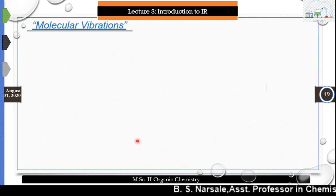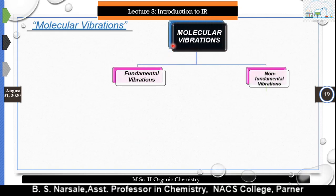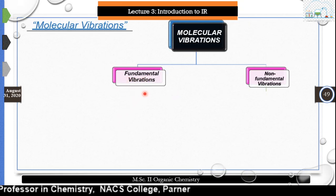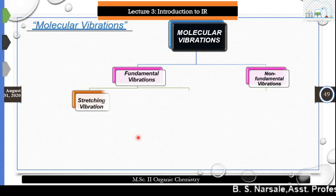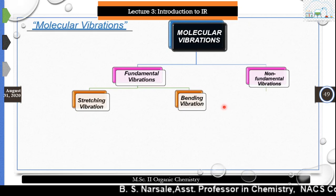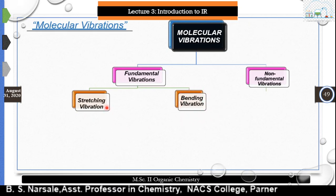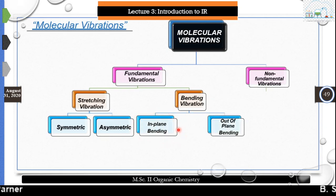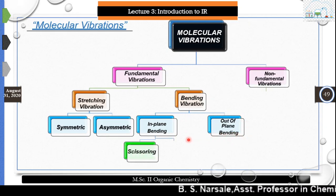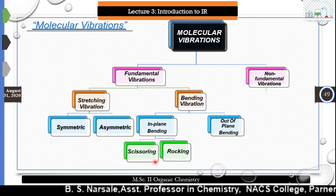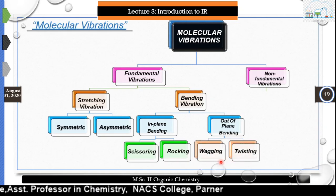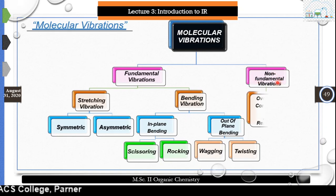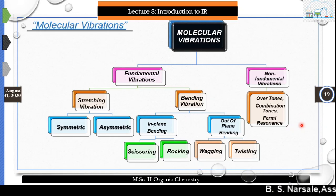Molecular vibrations are mostly divided into two types: fundamental vibrations and non-fundamental vibrations. Fundamental vibrations are further divided into stretching vibrations and bending vibrations. Stretching vibrations have symmetric and asymmetric types, while bending vibrations have in-plane bending and out-of-plane bending. In-plane bending includes scissoring and rocking, and out-of-plane includes wagging and twisting. Non-fundamental vibrations are overtones, combination tones, or Fermi resonance.